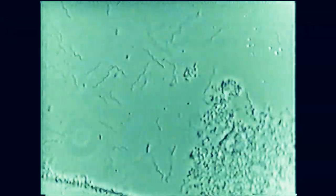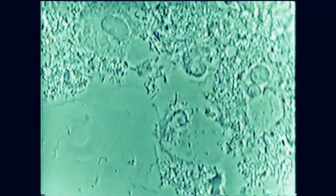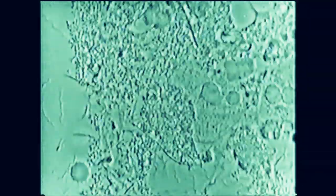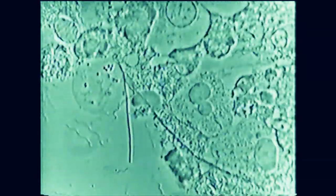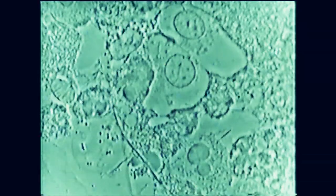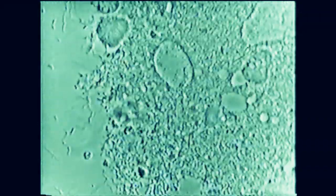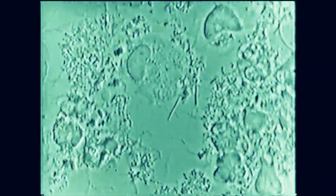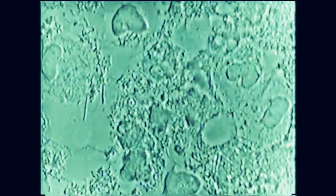Many treponema spirochetes, very active. But I want you to look closely at the white cells which are present in ANUG. Mostly what we can see are the white cells, and what we can see is the presence of those protozoa that are very violent with the three spirochetes.